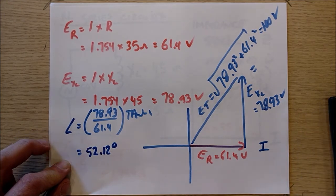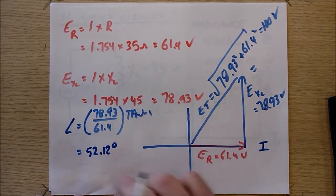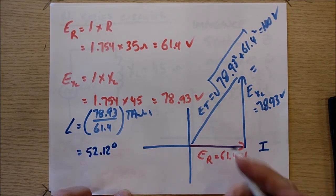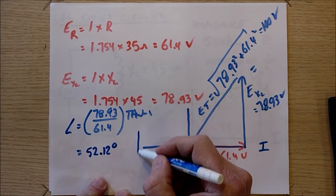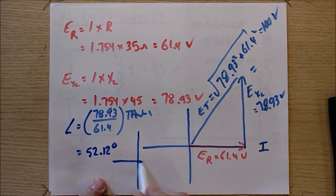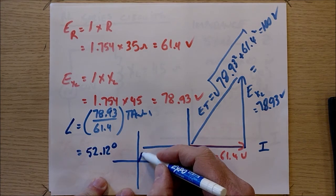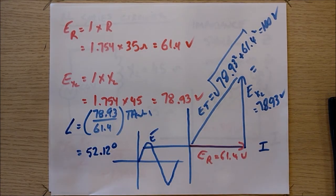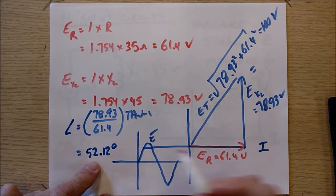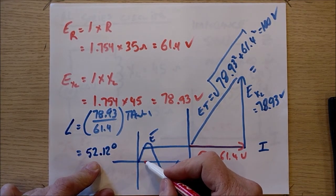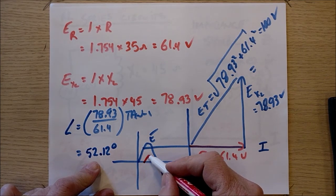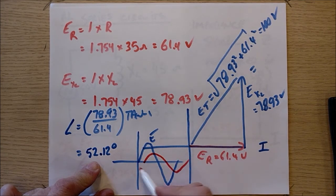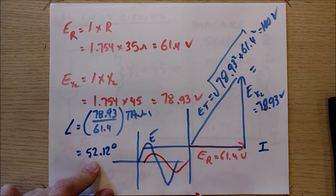What that means is if I took a look at the entire circuit with a scope, what I would see is my voltage kicking around like that. There's my voltage and my current. It would be lagging by 52.12 degrees. And so it'd be sitting like this, something like that, where that distance there is 52.12 degrees.